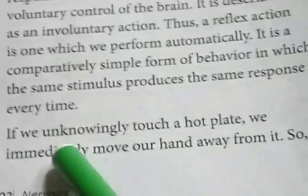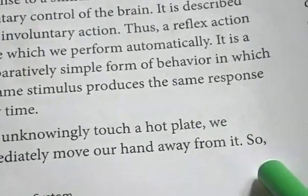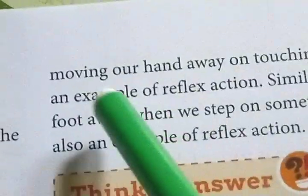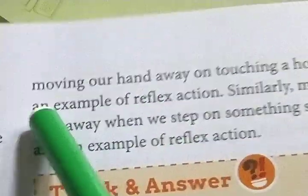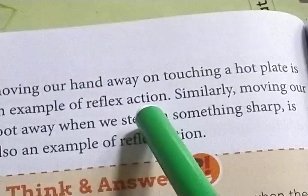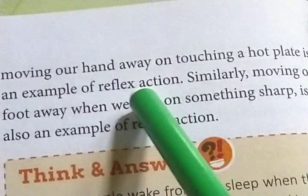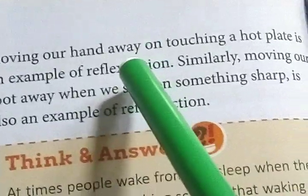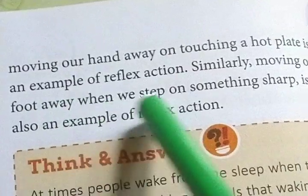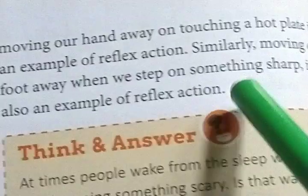If we unknowingly touch a hot plate, we immediately move our hand away from it. Moving our hand away on touching a hot plate is an example of reflex action. It is not directly controlled by the brain — it is activated automatically. Similarly, moving our foot away when we step on something sharp is also an example of reflex action.